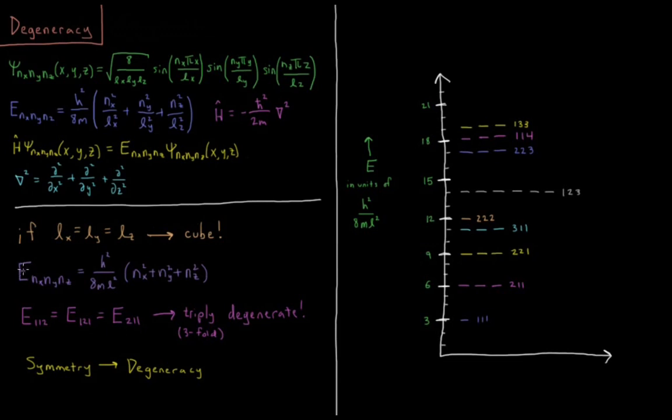So for the first state, e111, where each of these is equal to 1, that's no big deal. It's kind of the same as before. But now, look at this. What if we have nx equals 1, ny equals 1, nz equals 2, e112?